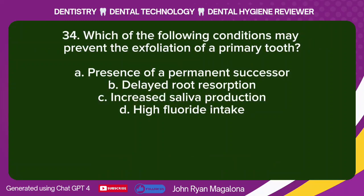Question 34: Which of the following conditions may prevent the exfoliation of a primary tooth? A. Presence of a permanent successor. B. Delayed root resorption. C. Increased saliva production. D. High fluoride intake. Answer: B. Delayed root resorption.